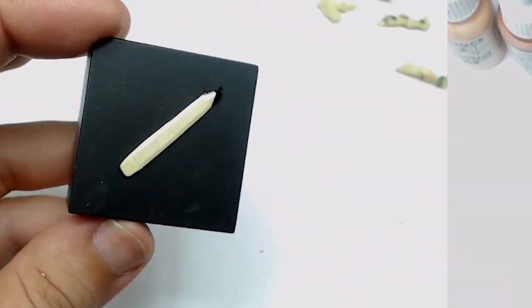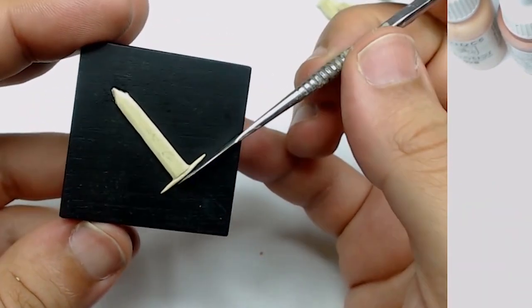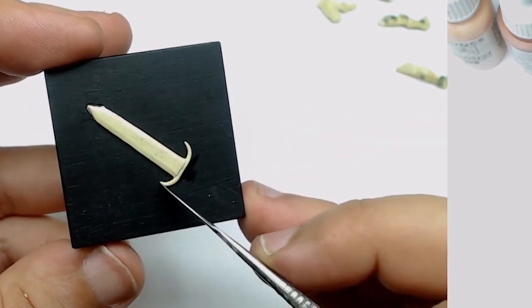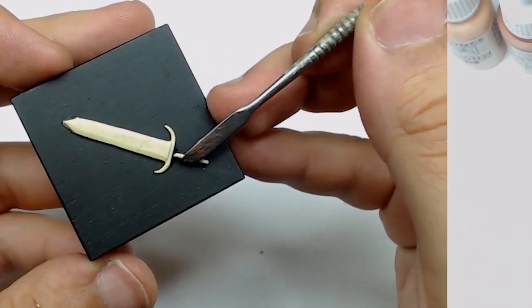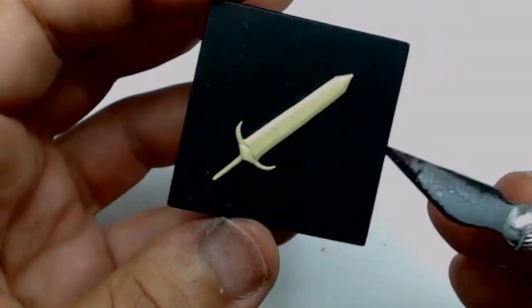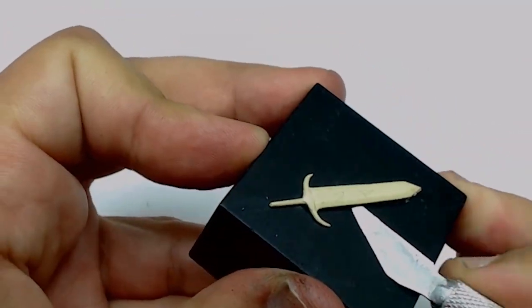After that, I continue by shaping the guard of the sword. You can put the size you want and the different form you want. After that, I put the sword handle.